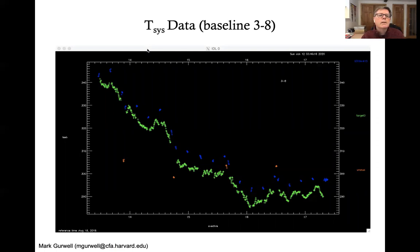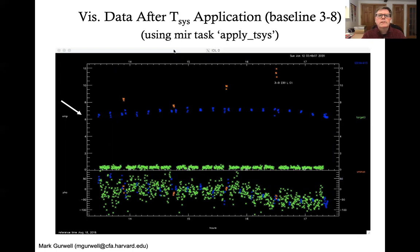So for this particular track on that particular baseline, this is what the system temperatures looked like in Kelvin as a function of time during the track. And you can see that the system temperatures are dropping a little bit with time. And that's because the source was rising to higher elevation and therefore lower atmospheric opacity.